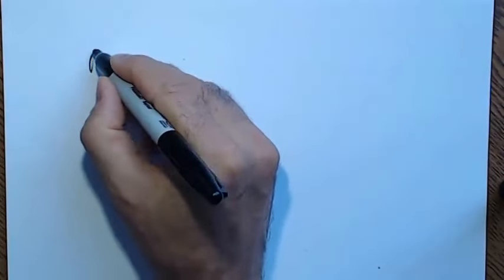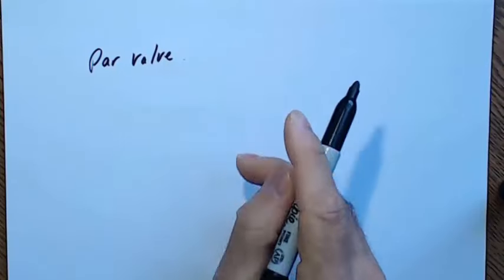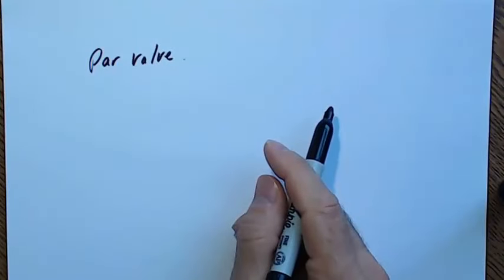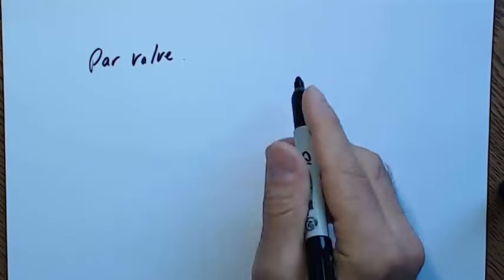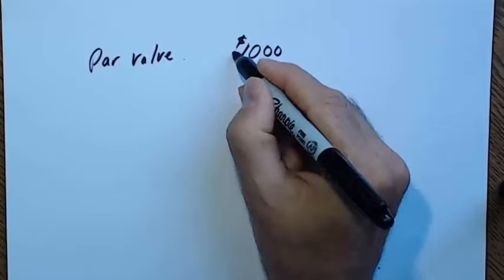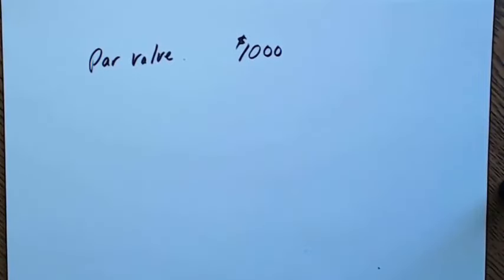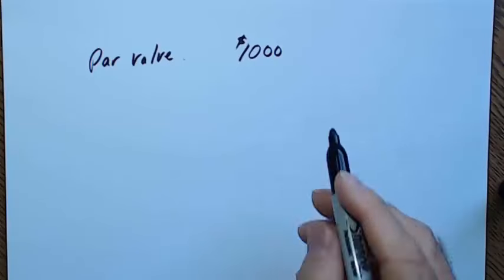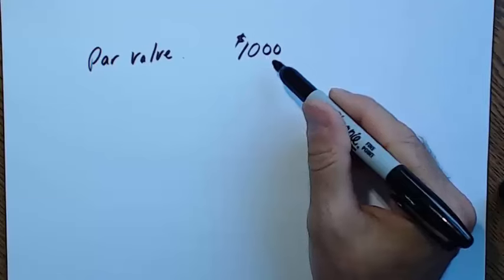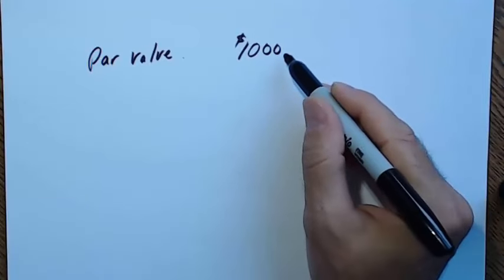Now let's look at the key characteristics of bonds. Bonds have a par value — also called the face amount — which is the amount paid at maturity. It's assumed to be $1,000 in this course. Nearly every course assumes the par value to be $1,000. Par value, face value, or maturity value — $1,000.